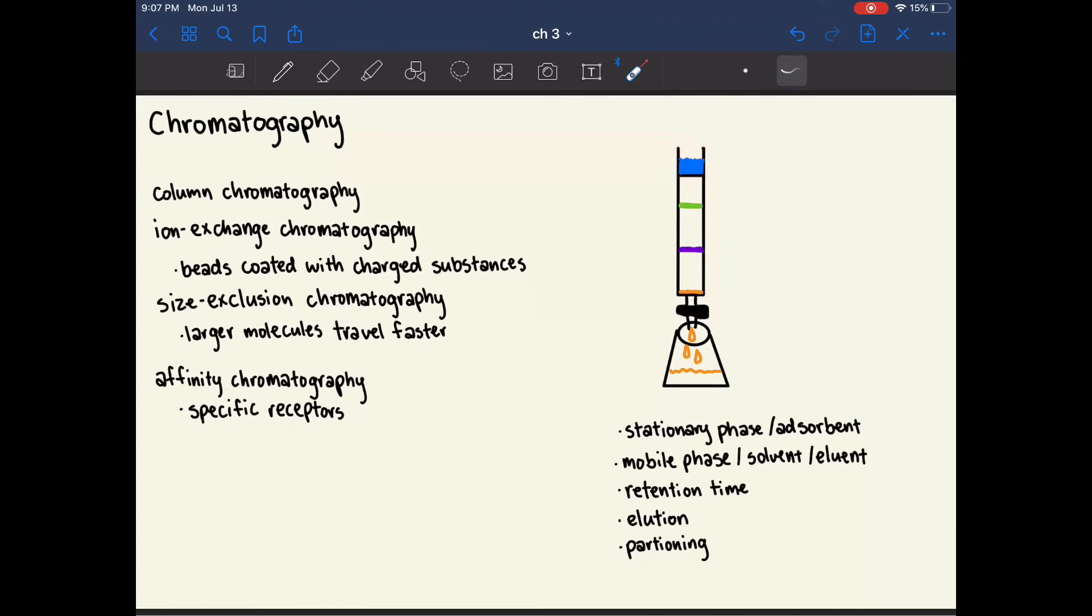Your sample of interest is loaded up here, and it's dissolved in the mobile phase or the solvent or the eluent, and this liquid will travel down through the stationary phase at varying speeds, depending on how polar it is or what the size is. So the retention time is how long a particular protein remains in the stationary phase. Elution is the word for when the protein of interest exits the column and into the collection vesicle, and partitioning is the process in which these different proteins travel down at different speeds, and therefore they're separated.